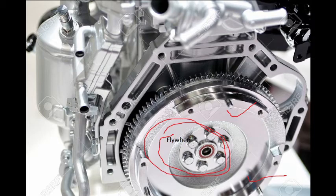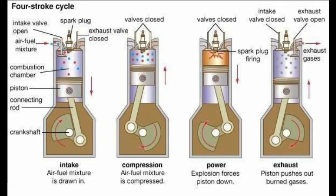The engine speed increases during the working stroke or power stroke because power is being produced, and the engine speed goes down during the other three idle strokes. This results in a fluctuation of speed — speed rises during the power stroke and falls during the three idle strokes. To reduce this fluctuation of speed, we need a flywheel.